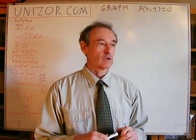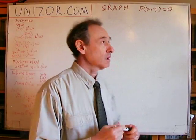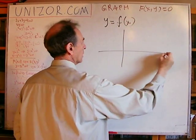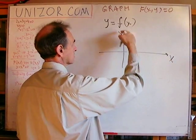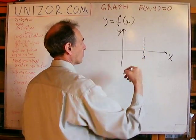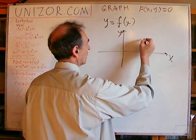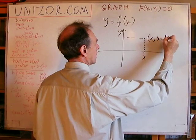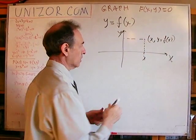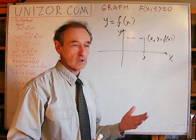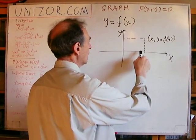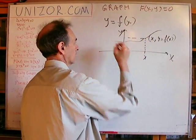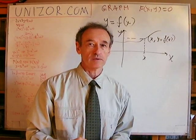We used to draw graphs of a function of one variable. On the coordinate plane, this is the x-axis, this is the y-axis, and for every x from the domain where the function is defined, we have the point with coordinates x and y equals f of x. With every x belonging to the domain of the function, we can draw this particular point, and all these points connect together — that's what forms the graph.